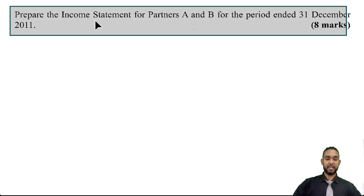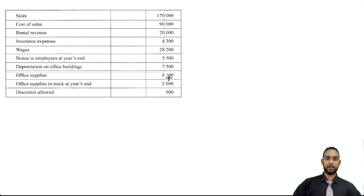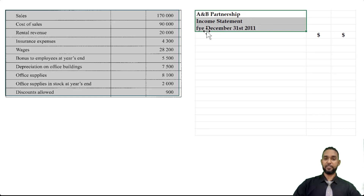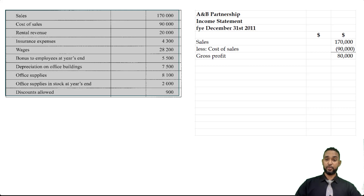Part B asks us to prepare the income statement for the period ended 31st December 2011. So we're pulling up the income statement data. The heading is: A and B Partnership Income Statement for the year ended 31st December 2011. We start with sales of $170,000, minus cost of sales $90,000, giving us gross profit of $80,000. We then add rental revenue, so 80 plus 20 gives us $100,000.